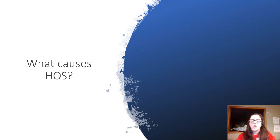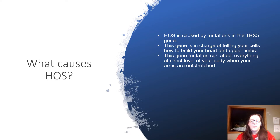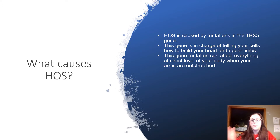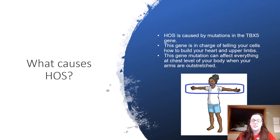What causes Holt-Oram Syndrome? It is caused by a mutation in the TBX5 gene, or one of the T-box genes. This gene carries the instructions that tell your cells how to build you when you're in the womb. During the baby's time in the womb, the TBX5 gene tells your cells how to build your arms, heart, shoulders, and all that. This gene can specifically affect everything at the chest level of your body when your arms are outstretched.